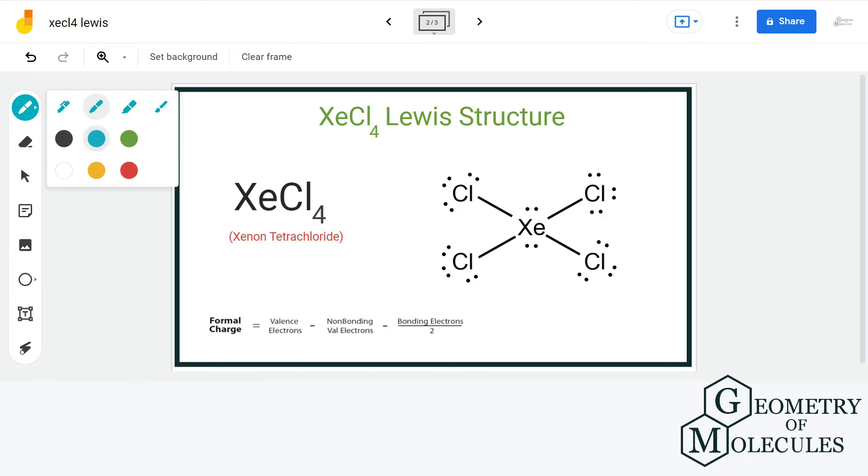Let us calculate the formal charge of each atom just to confirm that this is the best possible Lewis structure. For xenon, we have 8 valence electrons minus 4 non-bonding electrons minus 8 divided by 2 that gives us 0 formal charge.